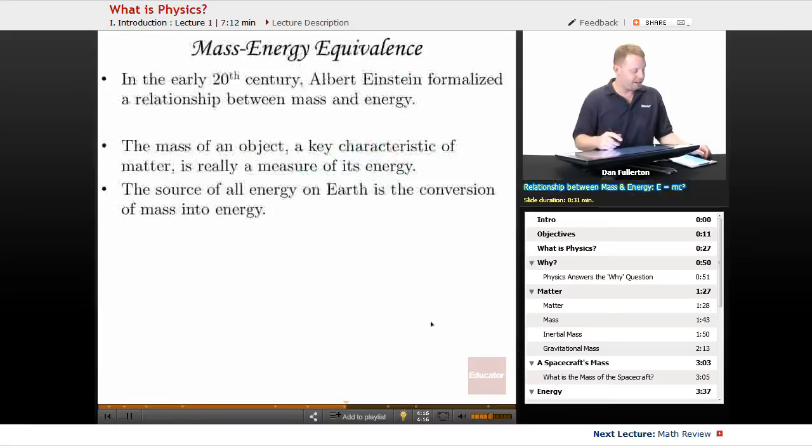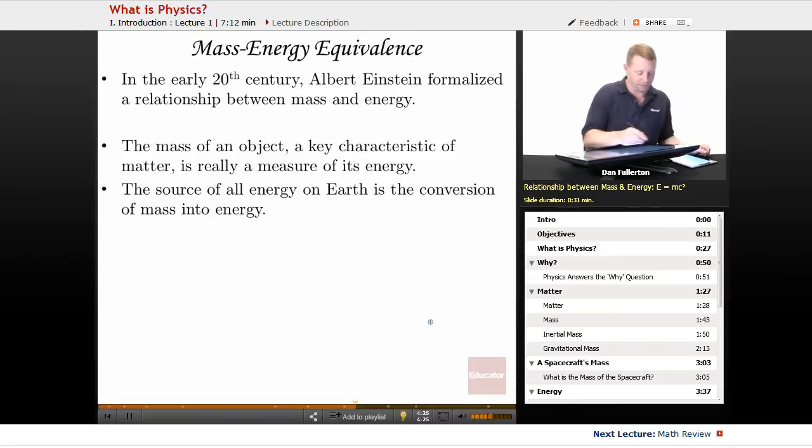And we'll refine that definition as we move through the course, but that's a good starting point for us. Now, in the early 20th century, Albert Einstein formalized a relationship between mass and energy that really brought all this stuff together. And you've probably seen this formula before. E equals mc squared. The mass of an object, a key characteristic of matter, is actually a measure of the energy contained in that object.